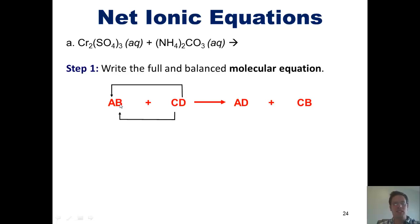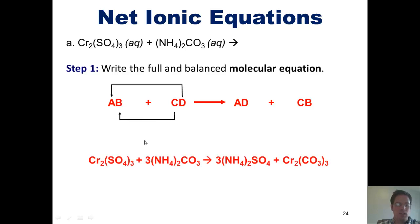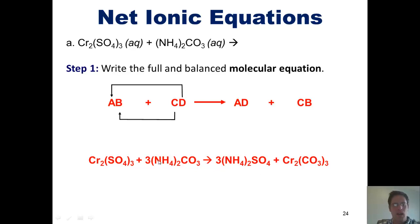What are A, B, C, and D in this particular example? Chromium is going to be A, sulfate is going to be B, ammonium is going to be C, and carbonate is going to be D. We now do the partner swap: chromium gets together with carbonate, and ammonium gets together with sulfate.